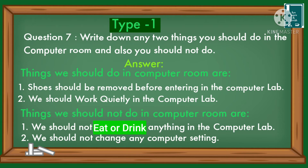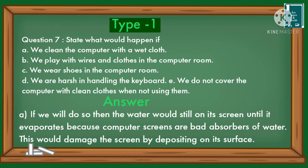Question: Write down any two things you should do and should not do in the computer room. Things we should do: number one, shoes should be removed before entering the computer lab; number two, we should work quietly in the computer lab. Things we should not do: number one, we should not eat or drink anything in the computer lab; number two, we should not change any computer settings.